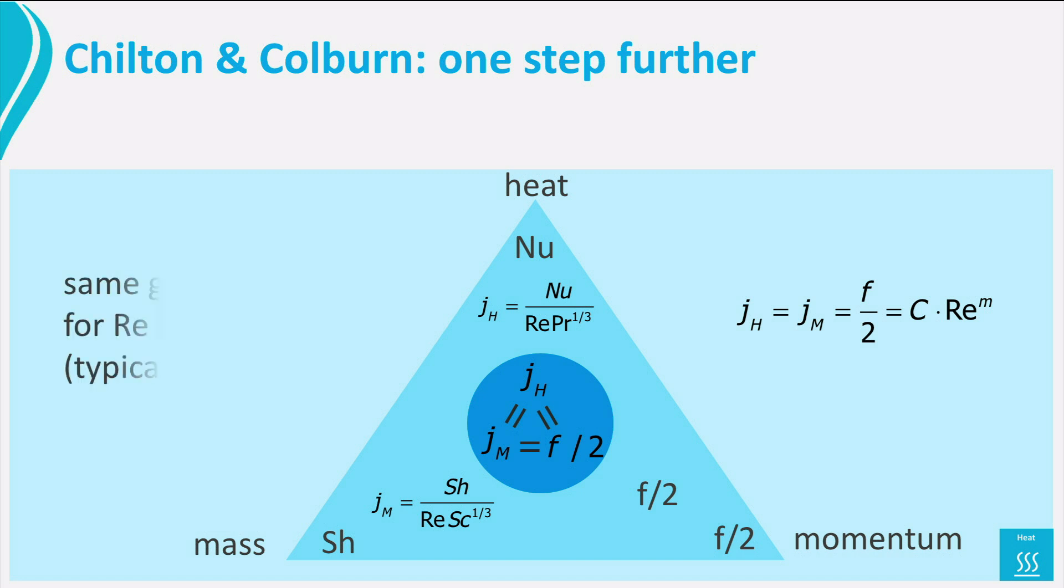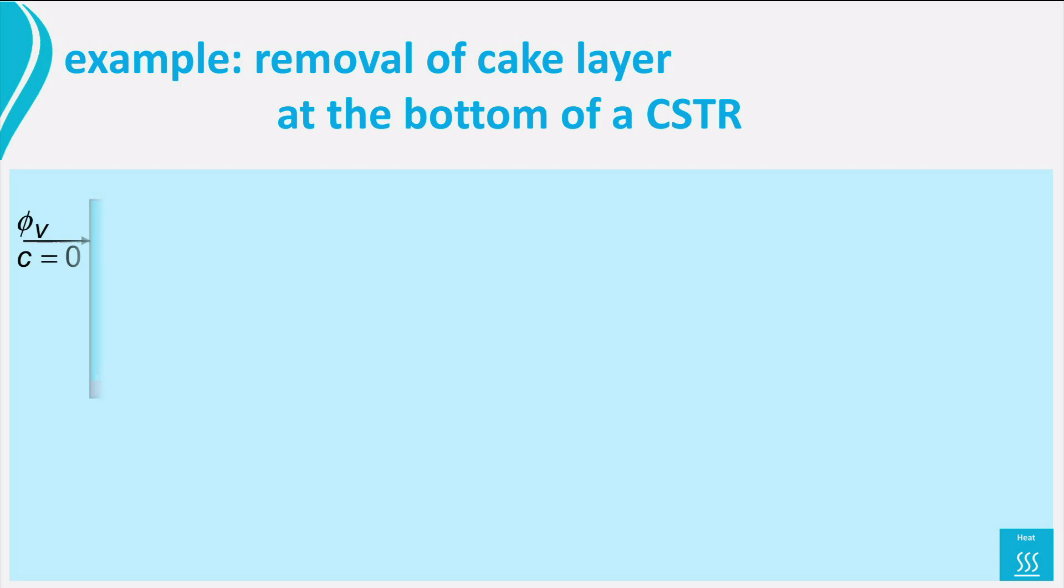Thus, we have for high Reynolds number the nice situation that heat, mass and momentum transfer behave in a universal way, if properly scaled. Ok, after all this theoretical work, time for an example.